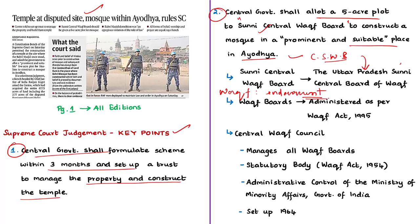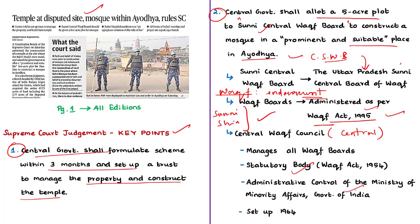Waqf boards exist in different states, either for a particular state or a group of states depending on the Muslim population. Waqf boards exist for Sunni and Shia sections of Muslims in various states and are administered as per the Waqf Act of 1995. To manage all the Waqf boards in different states of India, there is a Central Waqf Council — a statutory body under the administrative control of the Ministry of Minority Affairs, set up in 1964 as per the provisions of the Waqf Act of 1954.